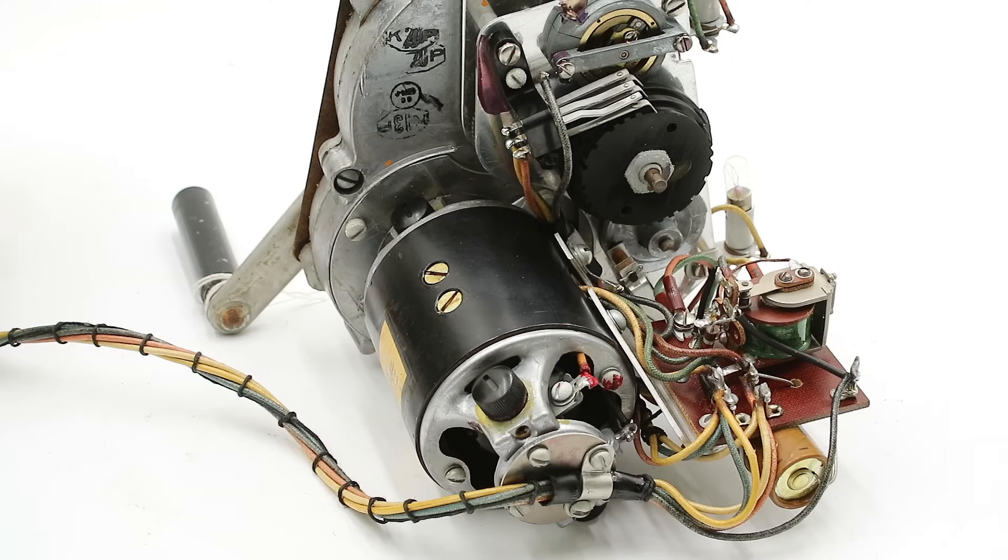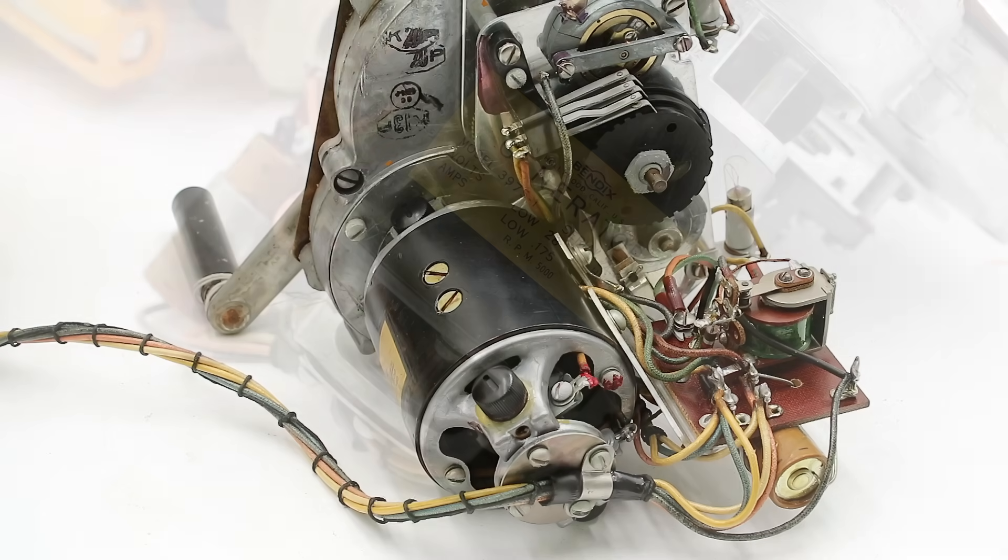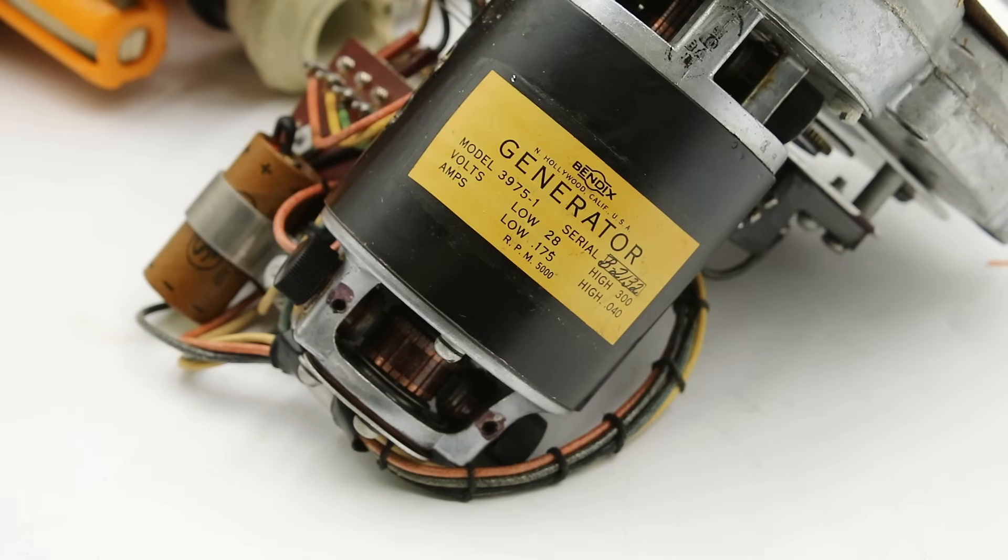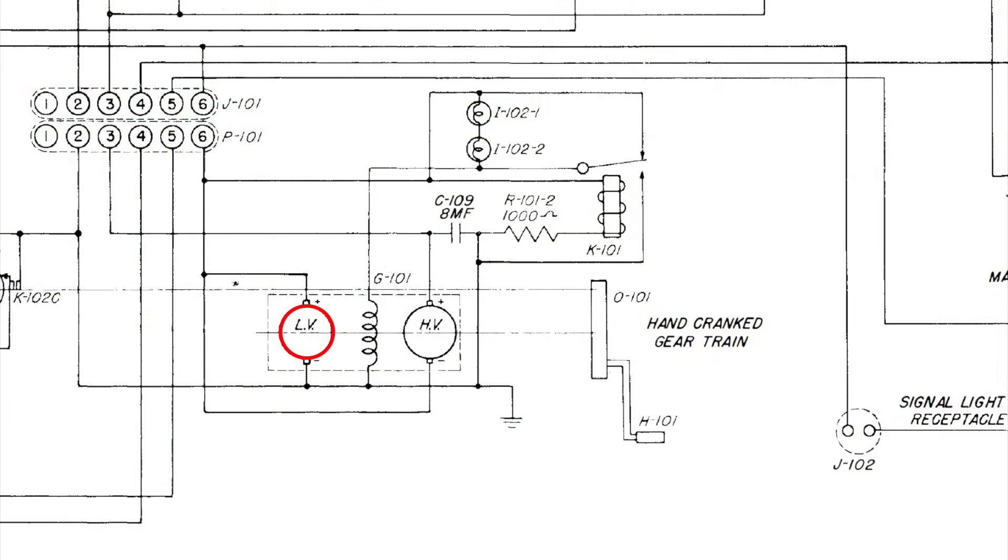Now on this side, we have the DC generator or dynamo that powers the transmitter and the signal lamp. And this has two windings on its armature, a primary winding that supplies 28 volts to power the filaments of the vacuum tubes, the relays, the two ballast lamps, and the signal lamp. And a secondary winding connected in series with the primary that supplies 300 volts to the vacuum tube plates and grids.